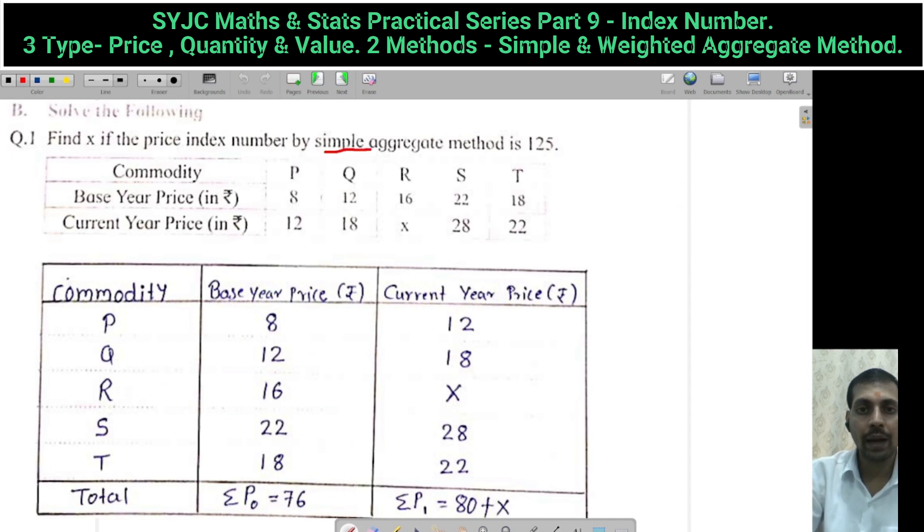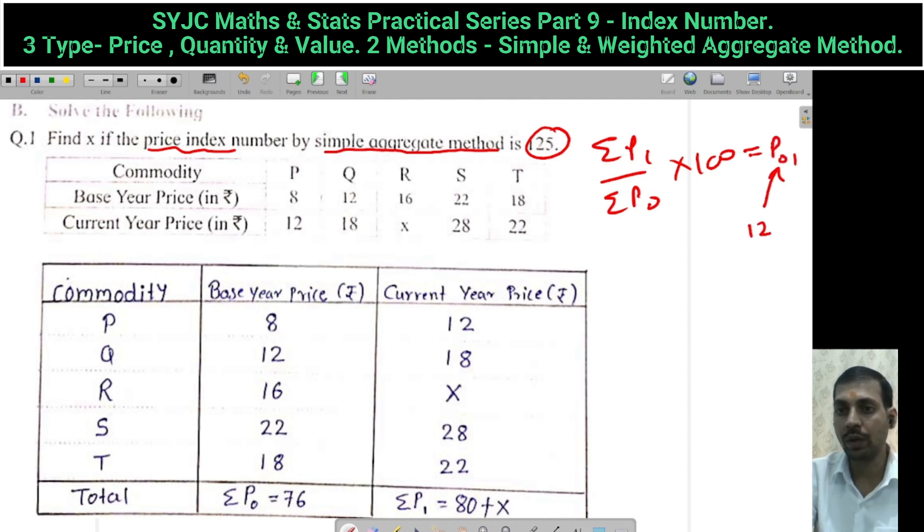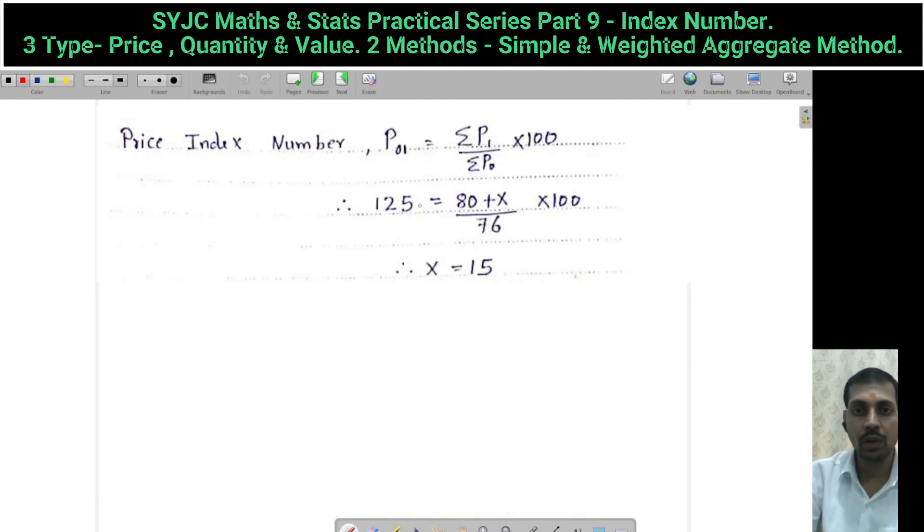Now simple aggregate method. You give price index 125. We know that summation P1 upon summation P0 into 100 is the price index number by simple aggregate method, denoted by P01. So P01 is 125. P1 total is 80 plus x, P0 total is 76. Substitute: 125 equals 80 plus x divided by 76 into 100. We get x equals 50.